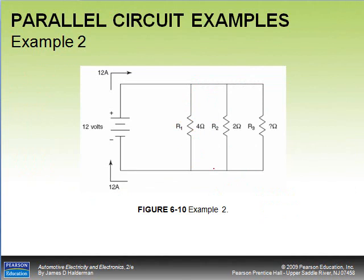Here's a more difficult example with three branches, all having different resistances. We know the total amperage in the circuit is 12 amps, but we don't know the value of one of the resistors.